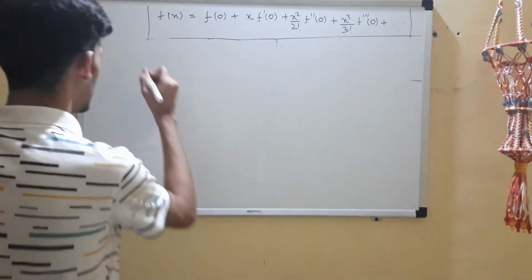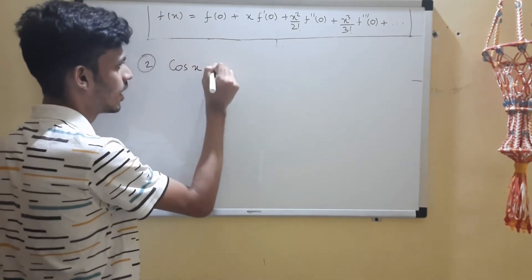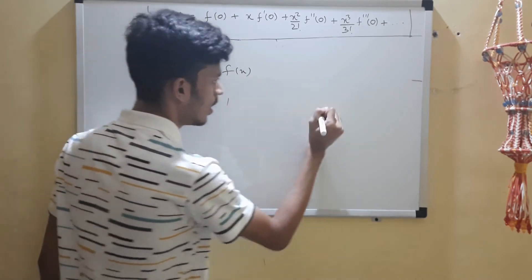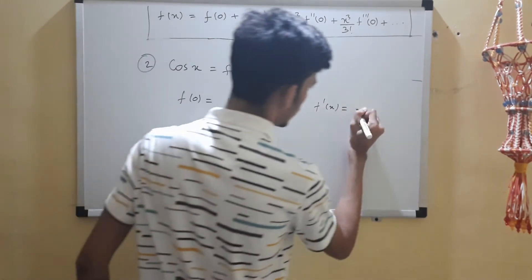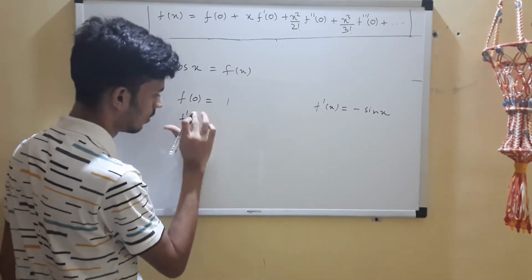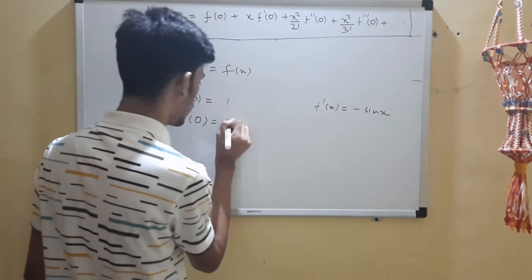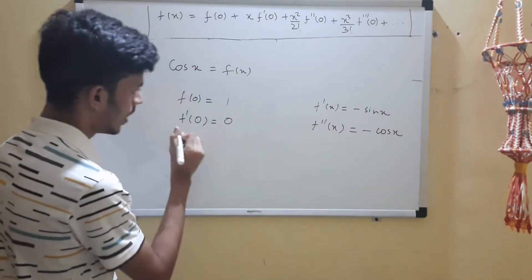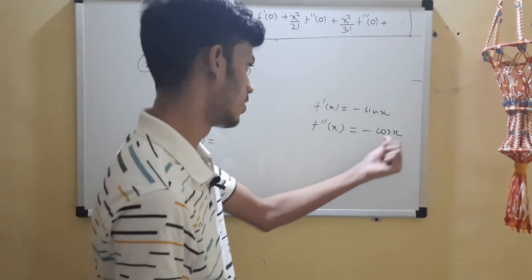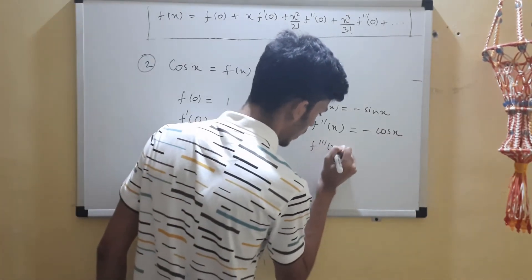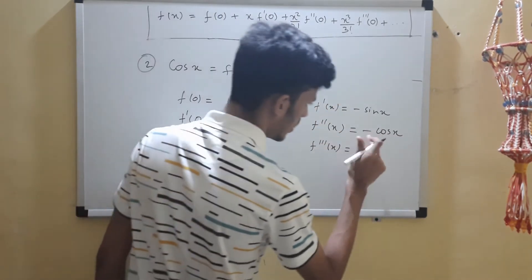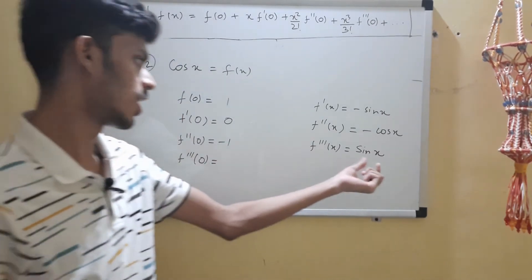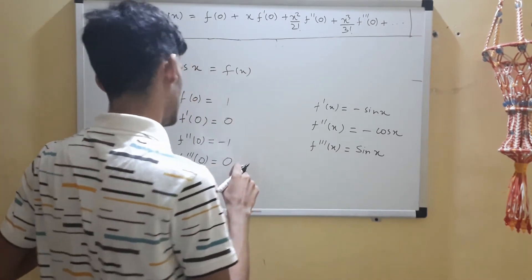Each series in your syllabus can be derived using this method. For the second one, let's choose f(x) equals cos x. f(0) equals cos 0 equals 1. f'(x) equals minus sine x, so f'(0) equals minus sine 0 equals 0. f''(x) equals minus cos x, so f''(0) equals minus 1. f'''(x) equals sine x (minus times minus becomes positive), so f'''(0) equals sine 0 equals 0. The pattern is: 1, 0, -1, 0, 1, 0, -1, 0.